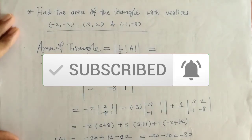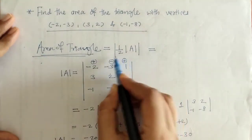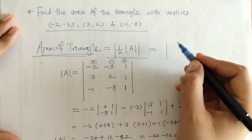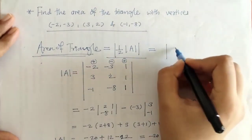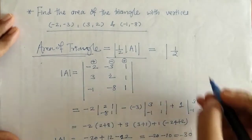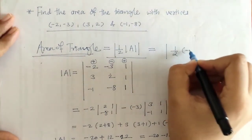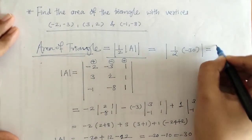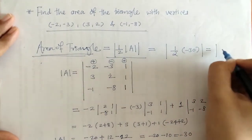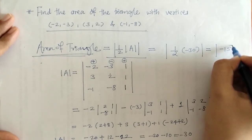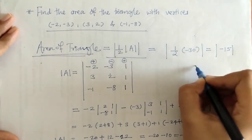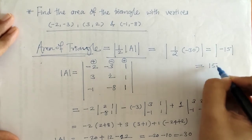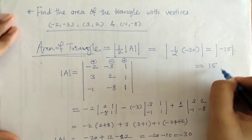We got the determinant value: this is minus 30. Now we write this value into the formula: mod of 1/2 into this determinant. So we get 1/2 × (−30) = −15, and mod of −15 is +15.